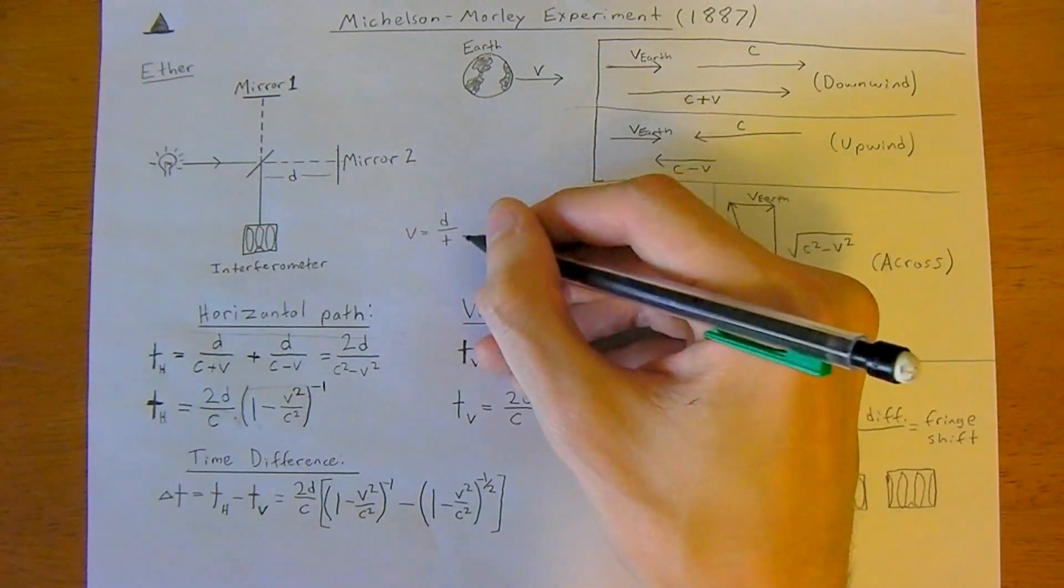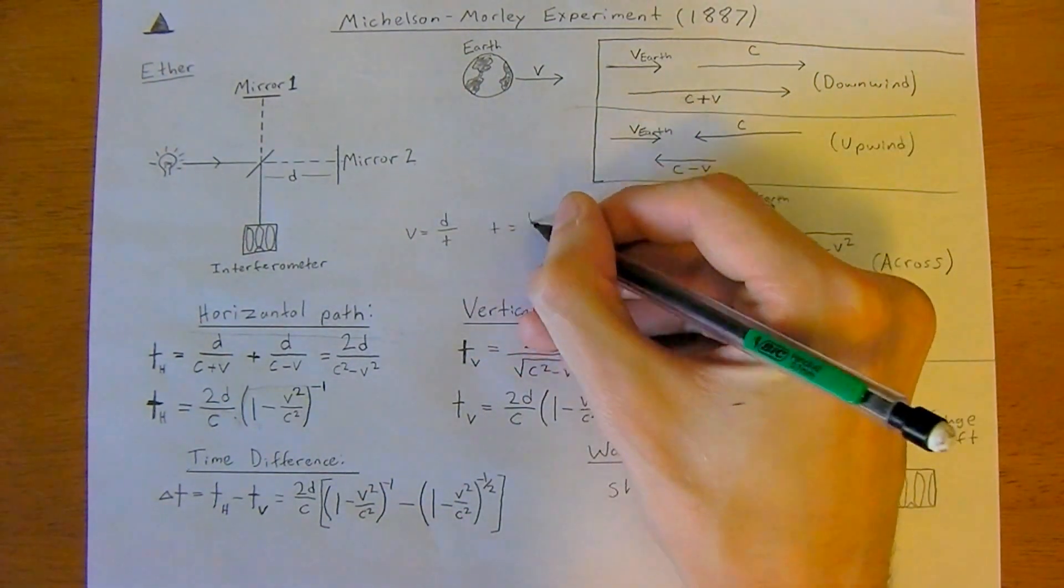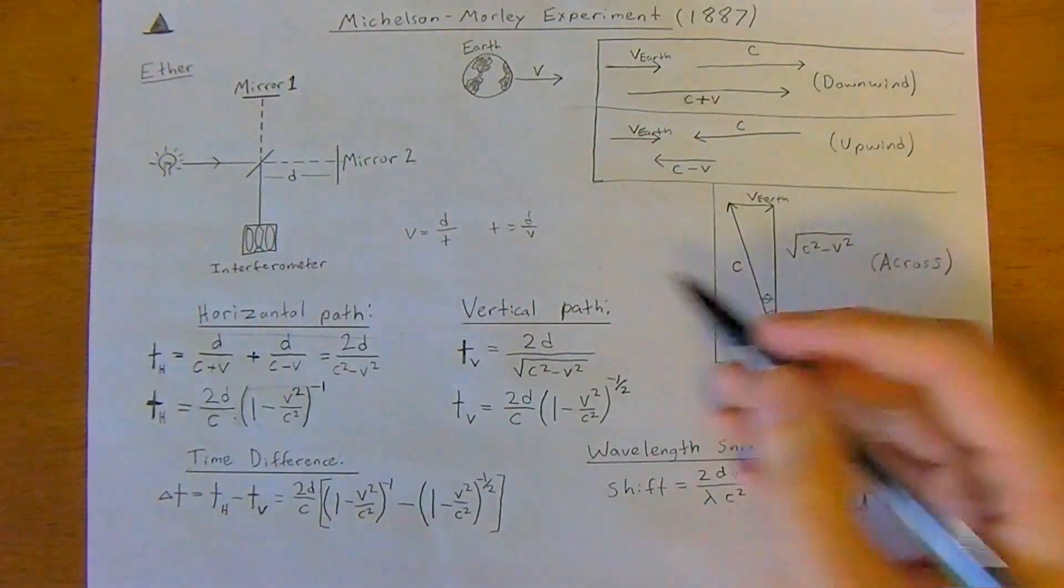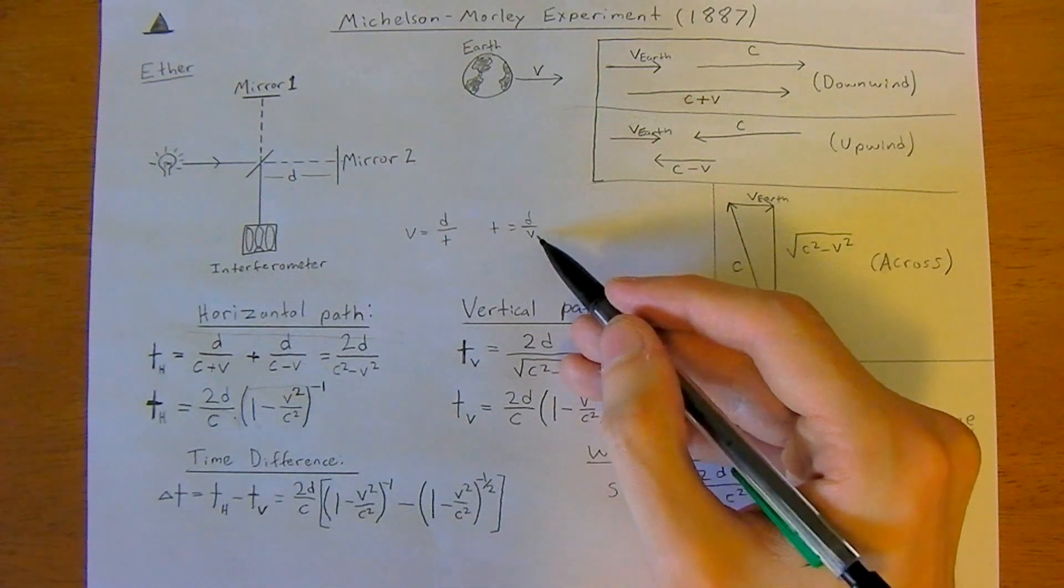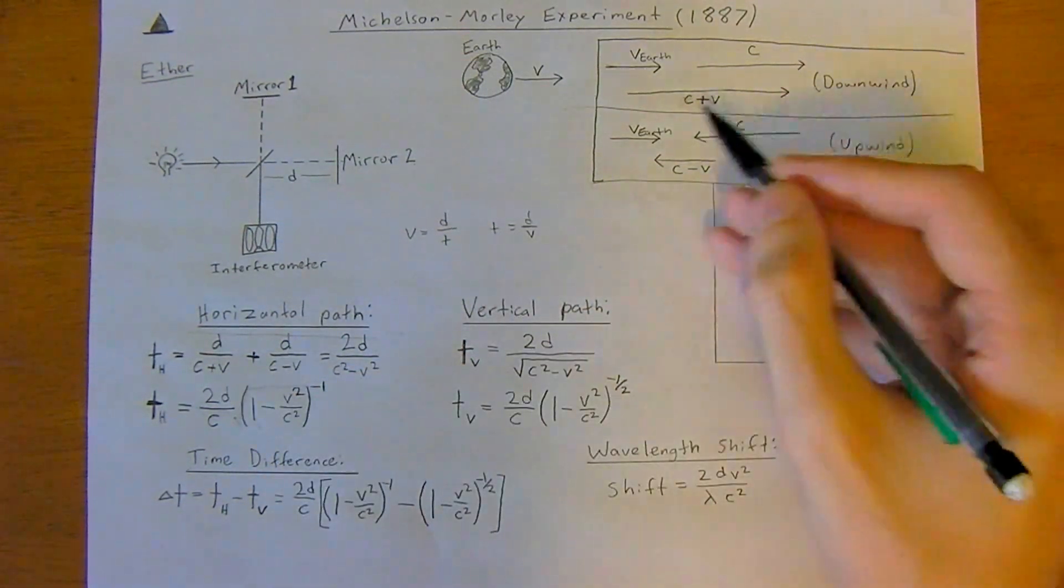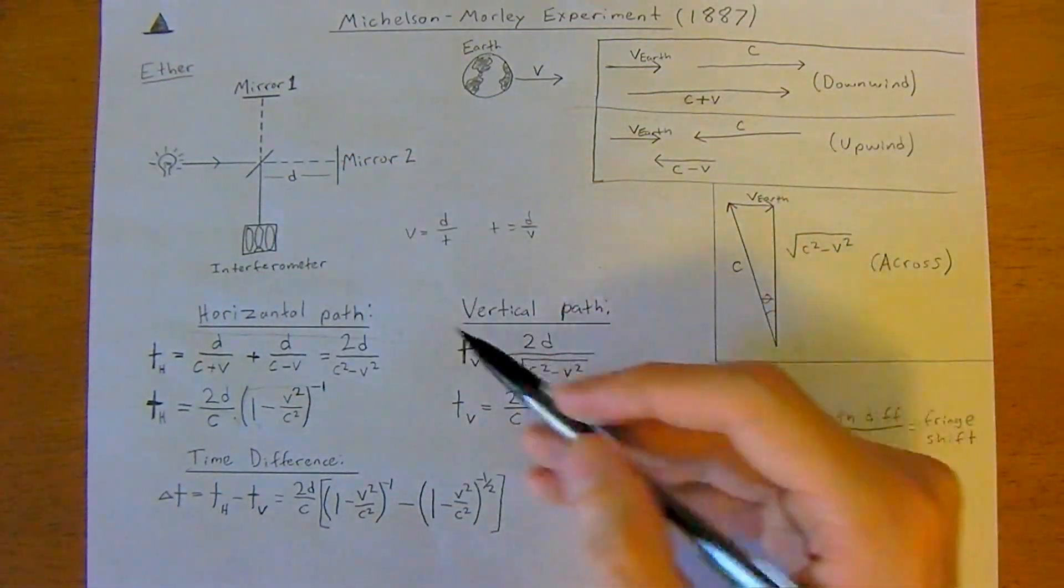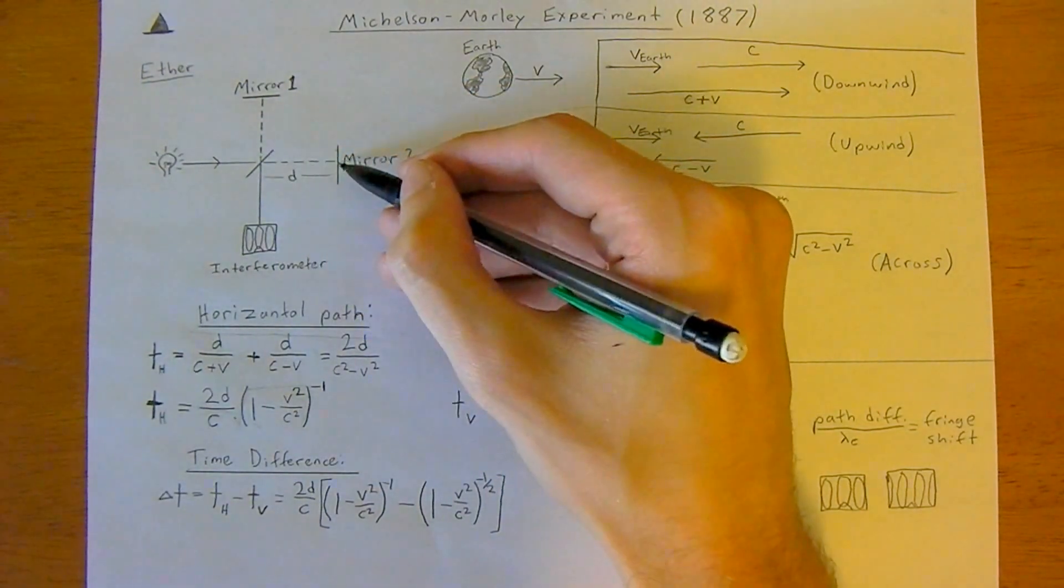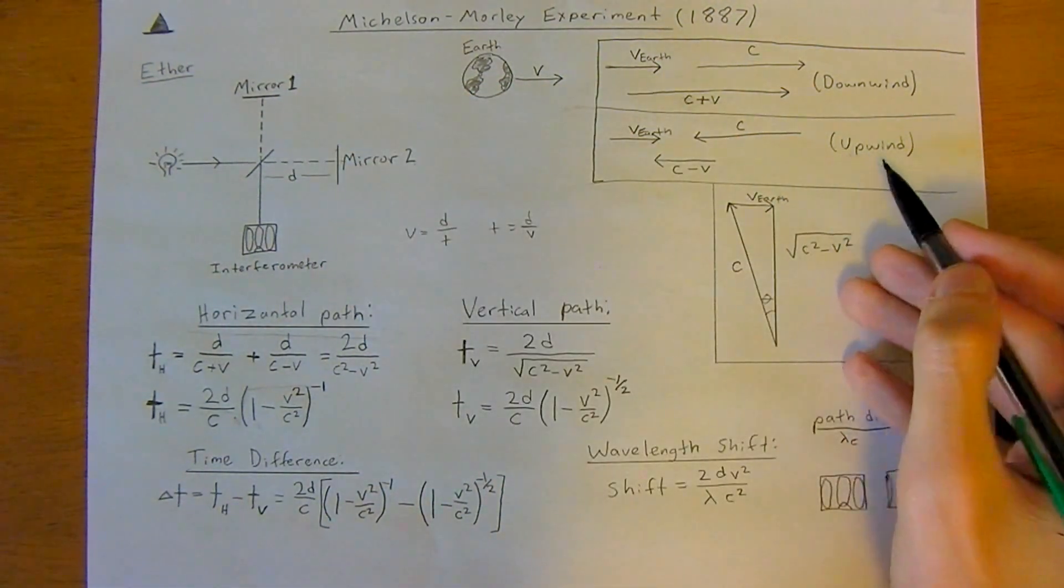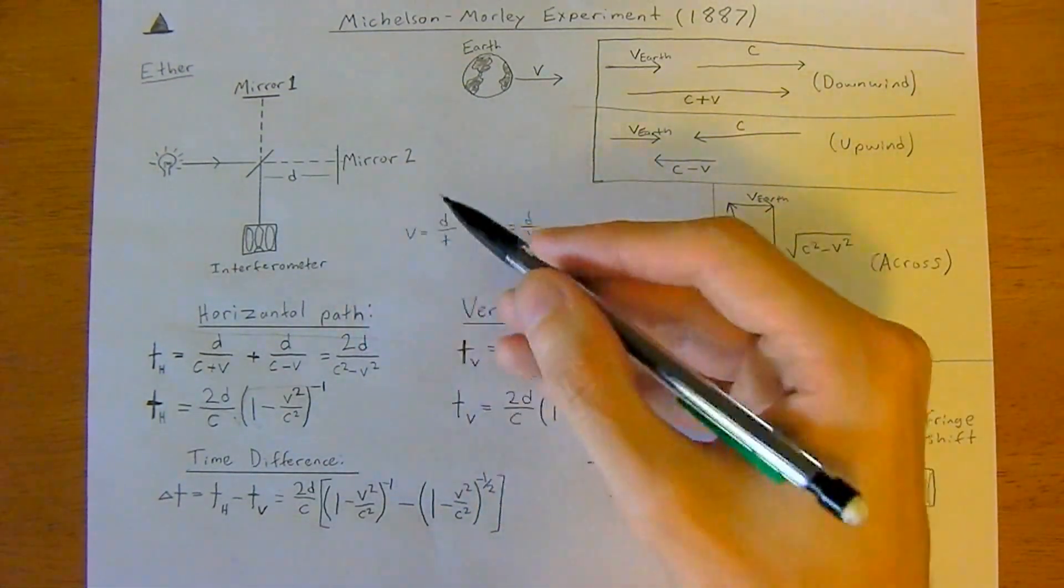They thought that velocity in this case would be cumulative, so it would add up in the downward direction—light going this way and earth going to the right. Then it would bounce off the mirror and head back, so then we'd be in the upwind case. Earth's moving to the right but light is now going backwards, opposing the earth, and the velocity should change.